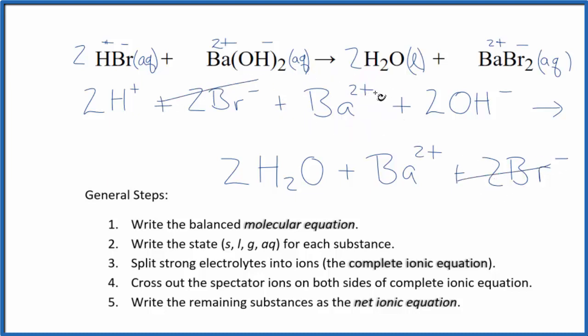Two barium ions here in the reactants, two in the products. Cross those out. But everything else, this is unique. And this is the net ionic equation for HBr plus Ba(OH)₂. I'll clean it up and write the states in, and we'll have our net ionic equation.